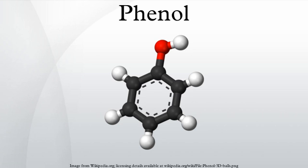Phenol is weakly acidic and at high pHs gives the phenolate anion C6H5O⁻. Compared to aliphatic alcohols, phenol is about 1 million times more acidic, although it is still considered a weak acid. It reacts completely with aqueous NaOH to lose H⁺, whereas most alcohols react only partially. Phenols are less acidic than carboxylic acids, and even carbonic acid.